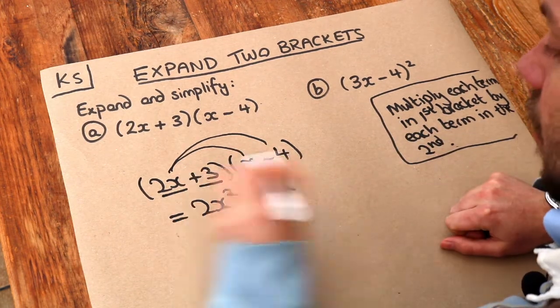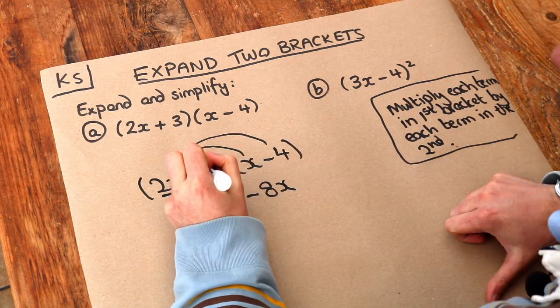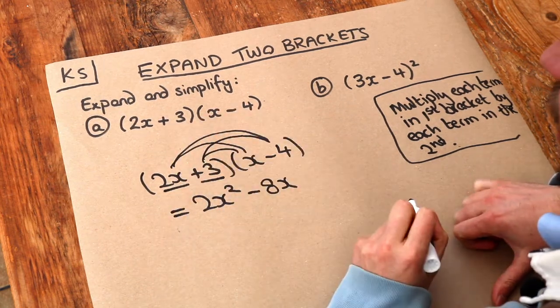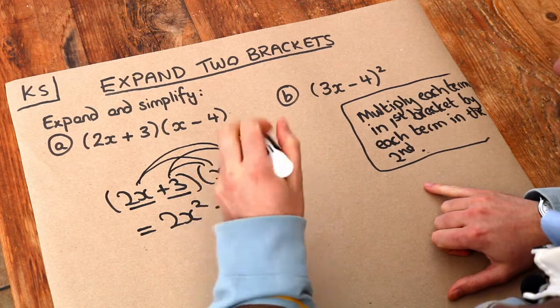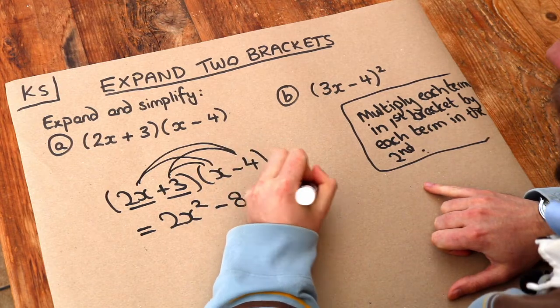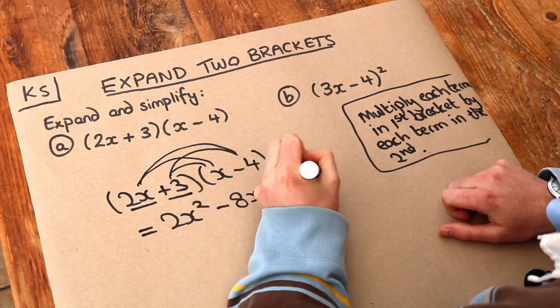And then we do the second thing in the first bracket multiplied by each of the things in the second bracket. So we've got the 3 times the x which is plus 3x and we've got the 3 times the minus 4 is minus 12.